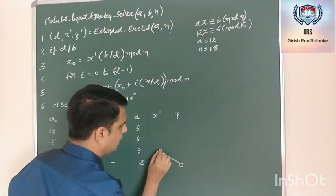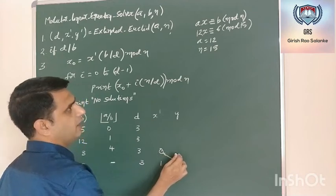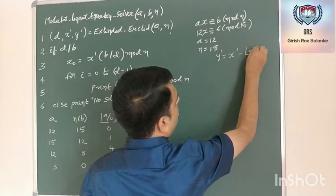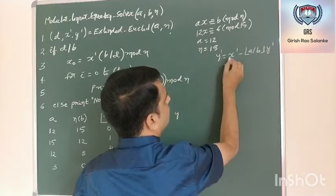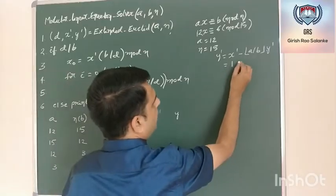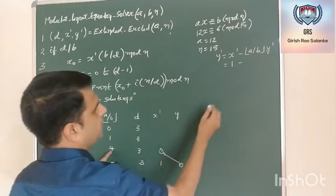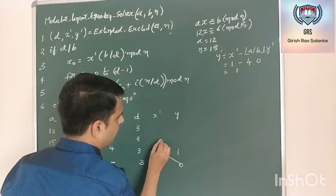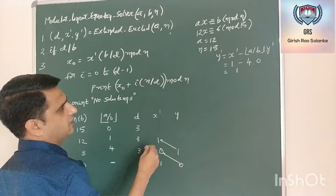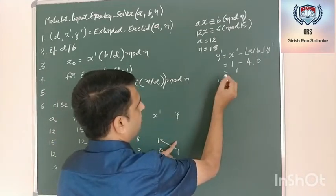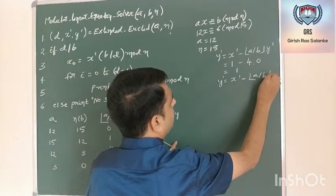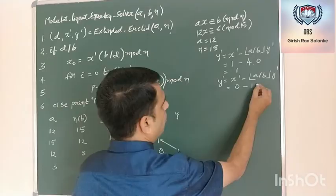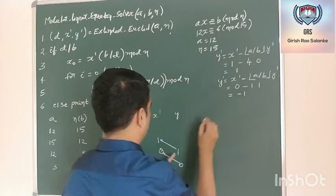For this iteration, my y value will be x. y dash is equal to x dash minus floor(a divided by b) times y dash. What is x dash? x dash is 1. So 1 minus (a divided by b is 4) times 0 gives 1 minus 0, which is 1. This y becomes the value of x for the next iteration. For the next step, y dash equals x dash minus (a/b) times y dash. x dash is 0, a/b is 1, so 0 minus 1 times 1 gives minus 1.